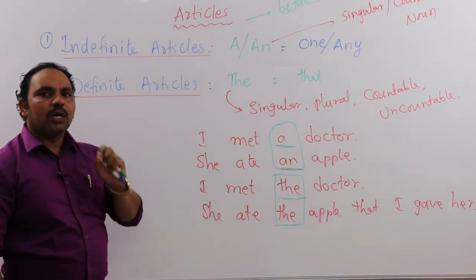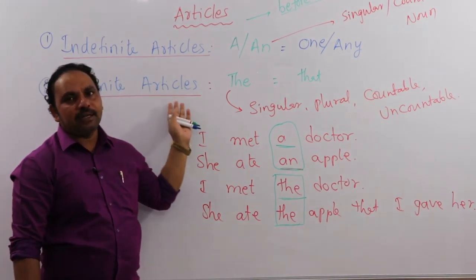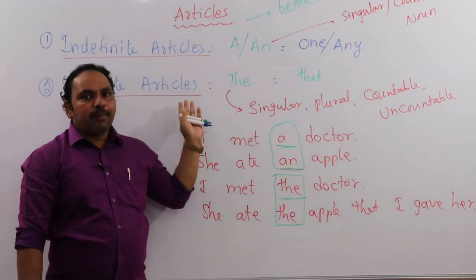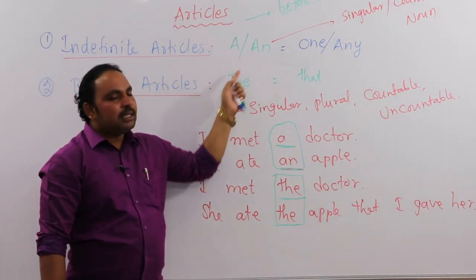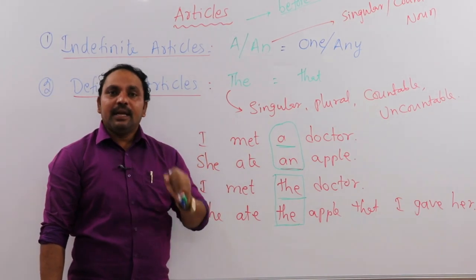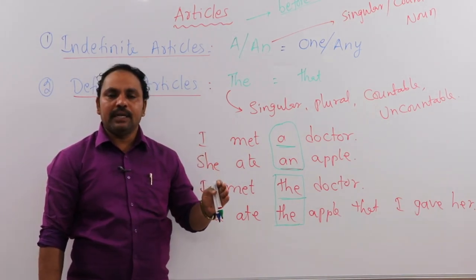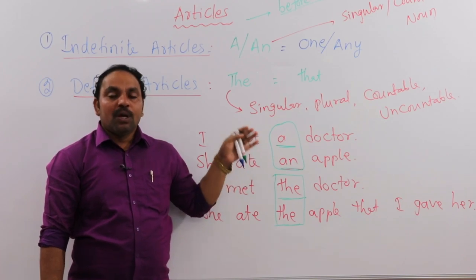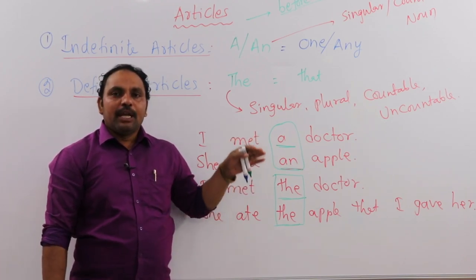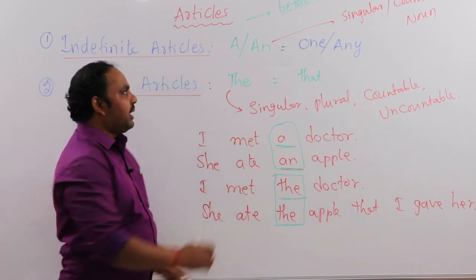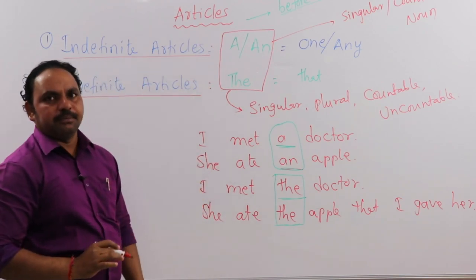This is the introduction to the two types of articles: indefinite article and definite article. Now we need to discuss when to use them and when not to use them. In examinations, questions will be asked about their usage. Now we will learn about the usage of 'a,' 'an,' and 'the.'